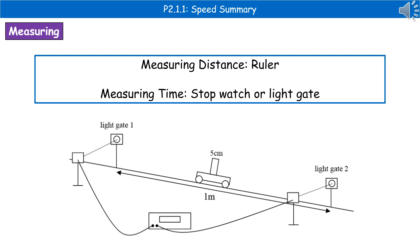When calculating speed, we need to measure distance and time. For measuring distance, the most common way in a lab setting is with a ruler, and to measure time you've got two options: either a stopwatch or a light gate.